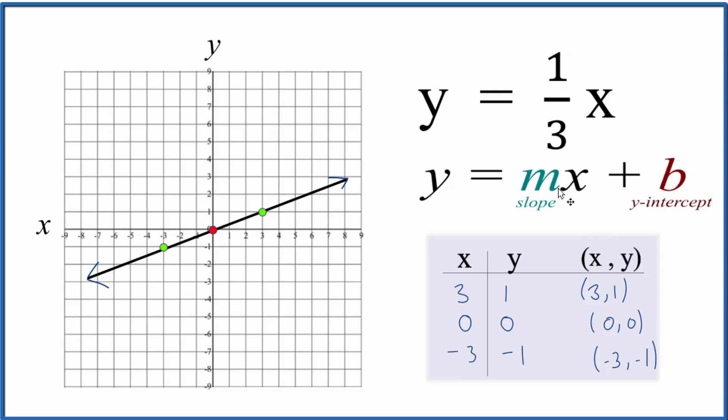Next, we can look at one-third, which is our slope. We can consider that to be rise over run. Starting at our y-intercept of 0, we go up 1 and over 1, 2, 3. Then we can keep doing that. Going from there, up 1 over 1, 2, 3.